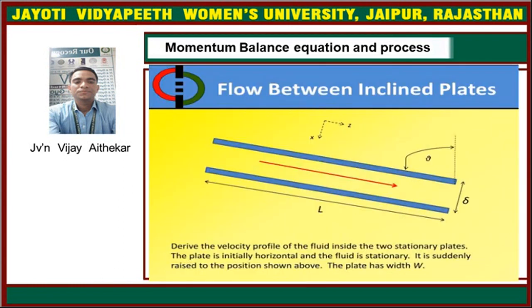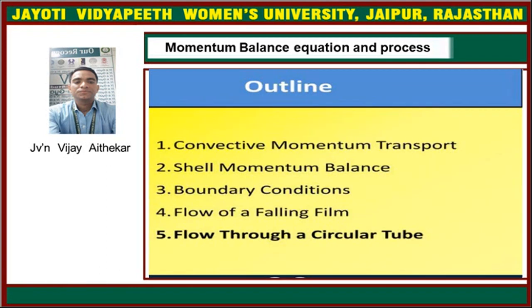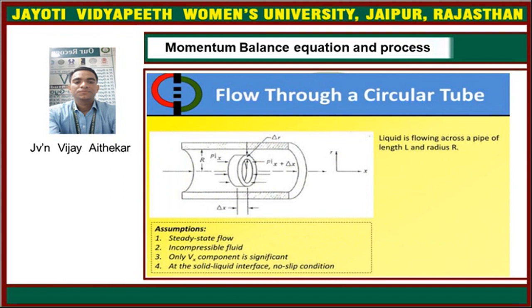The flow between inclined planes describes the velocity profile of flow between two stationary parallel plates, initially horizontal, where flow is stationary and then suddenly rises. Now for flow through a circular tube, the diagram is shown along the xy-axis. Liquid flows across a pipe of length L and radius R. Assumptions: steady-state flow, incompressible fluid, significant gravity component, and no-slip condition at the solid-liquid interface.